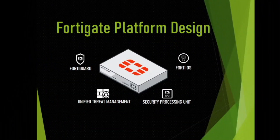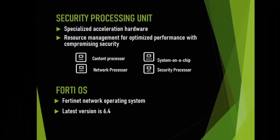To make it easier to understand, I created an illustration for you to visualize what's running inside a FortiGate deployed on a live network. The Security Processing Unit is the CPU of FortiGate. By design, FortiGate has multiple processors for different processes, which results in optimized performance. Meanwhile, FortiOS is their own operating system — this includes the web GUI and the CLI, where you perform management and maintenance tasks. The latest version right now is 6.4.